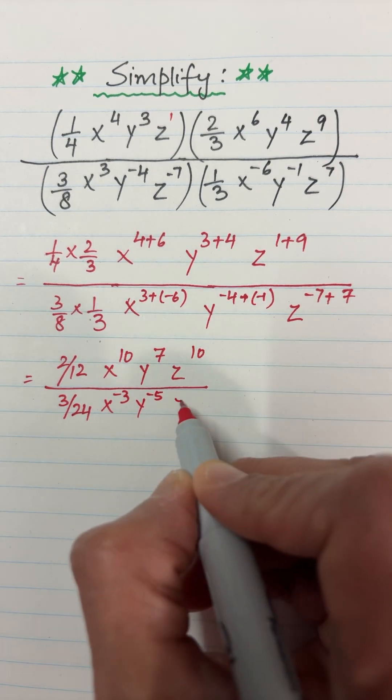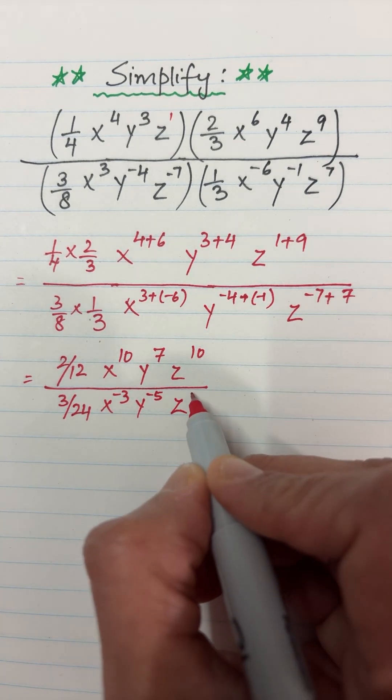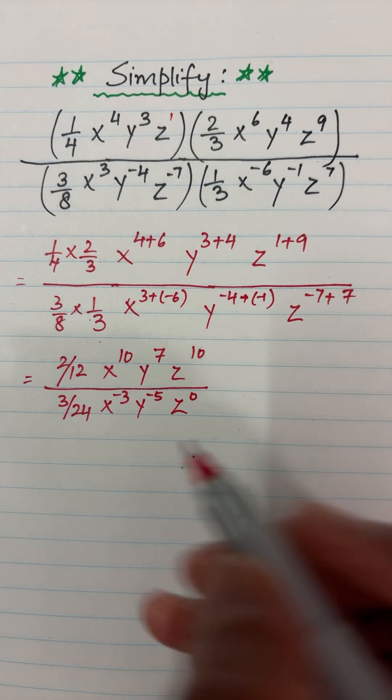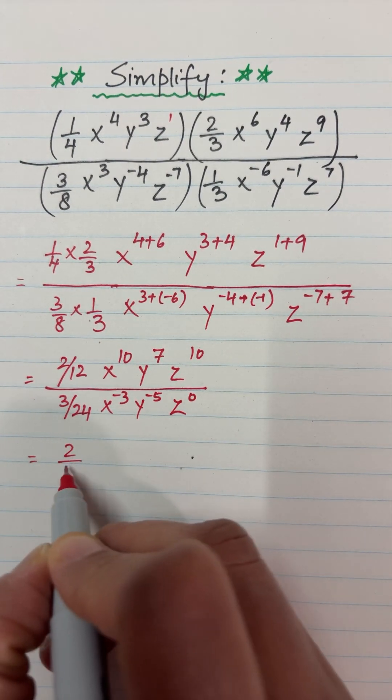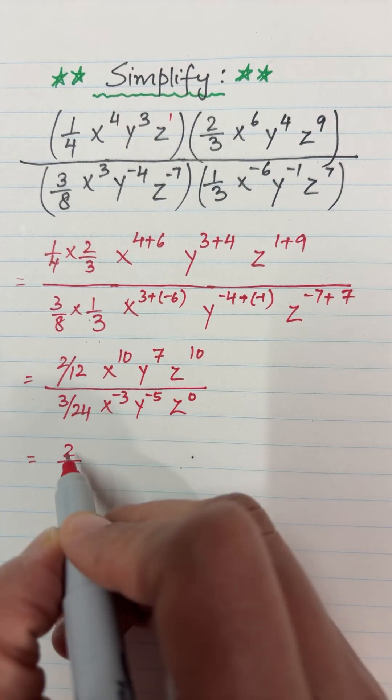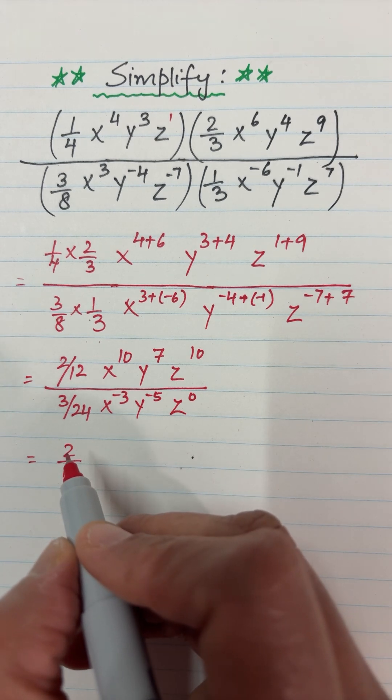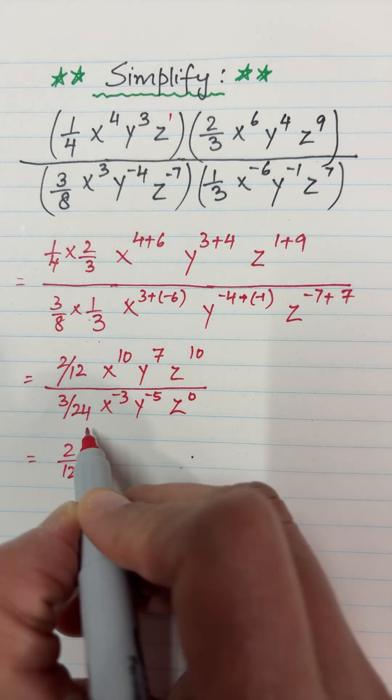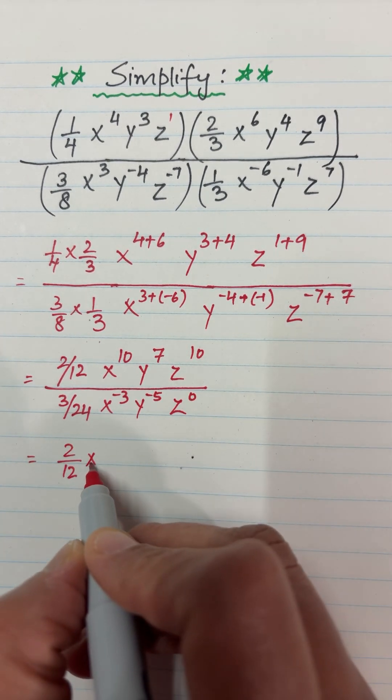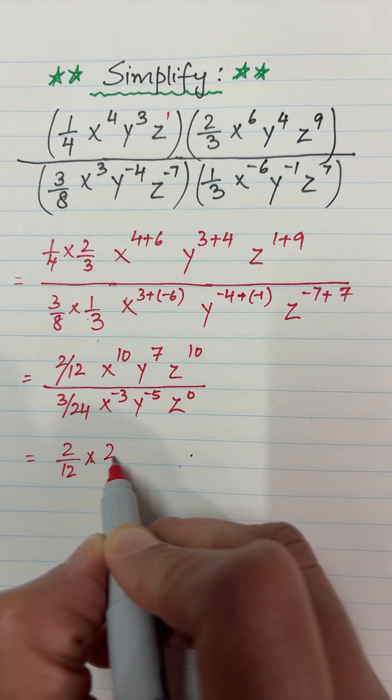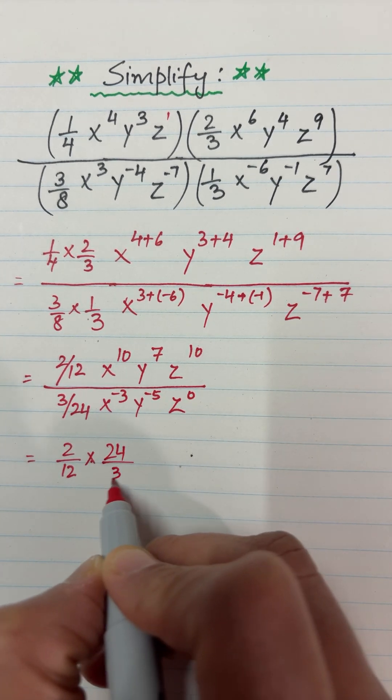This equals 2/12 over 3/24. When we are dividing the two fractions, the division is the same as multiplication with the reciprocal of the second fraction. So multiply with the reciprocal of 3/24, which is 24/3.